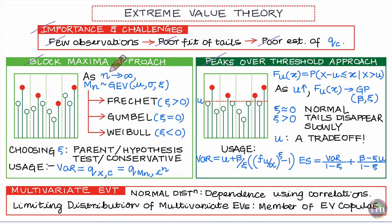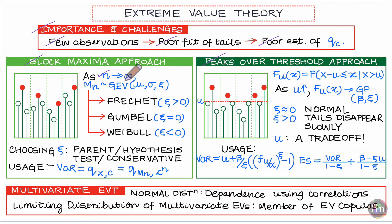The block maxima approach tells us that as the size of each block, n, increases and hypothetically approaches infinity, the maximum value from any block — called M subscript n — converges to a distribution called the generalized extreme value (GEV) distribution. Therein lies the power of this result: even without knowing the parent distribution, the block maximums converge to the GEV distribution.